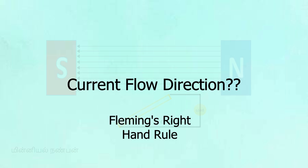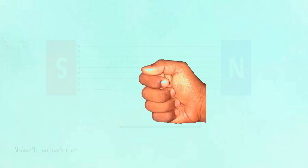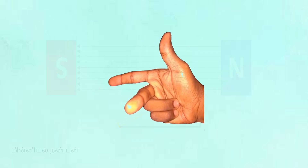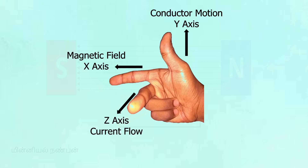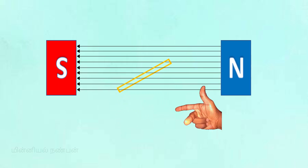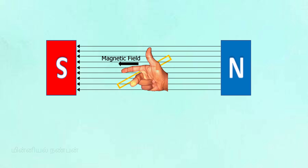The current flow direction follows this rule. This is the right-hand rule. One rule gives us a direction. If you look at the image, the key point is to identify the wire move direction — the motion direction of the conductor.